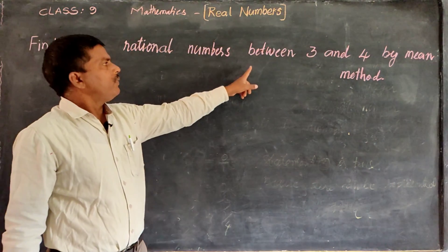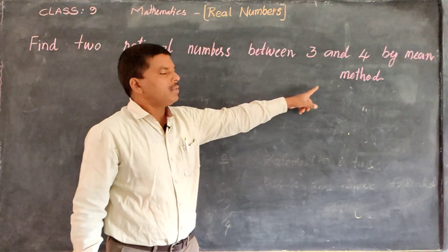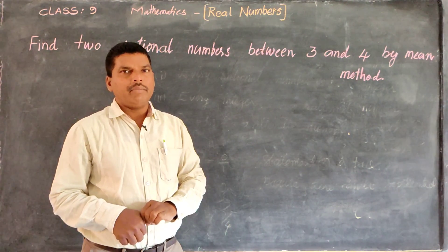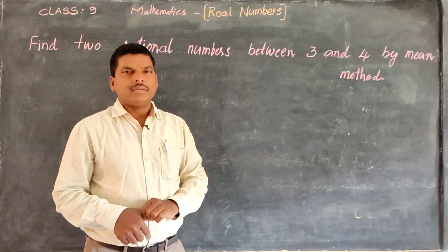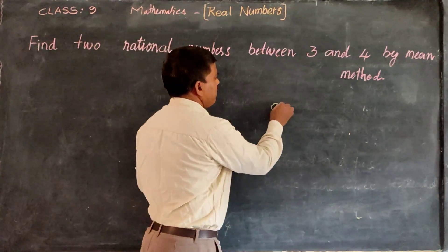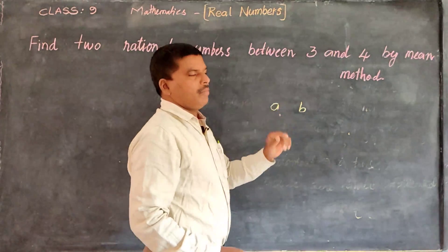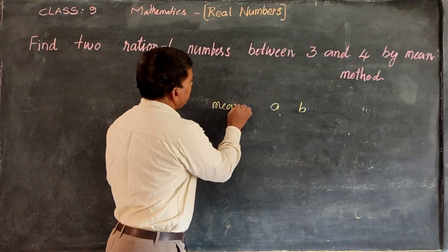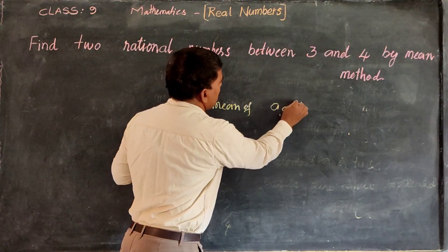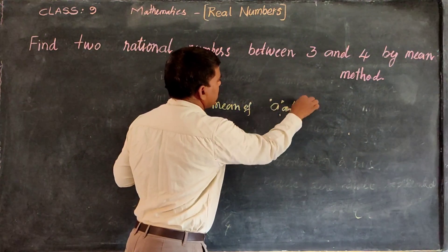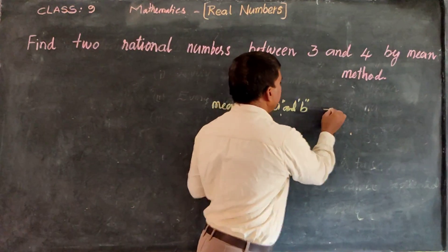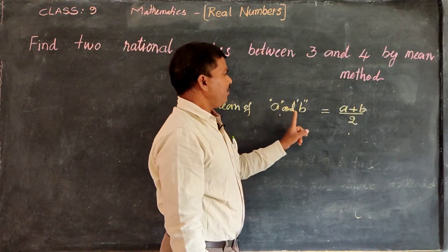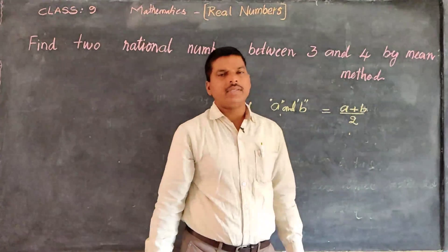Find two rational numbers between 3 and 4 by the mean method. What is the mean method? If you take any two numbers A and B, the mean of A and B is equal to A plus B by 2. So this is the mean method.